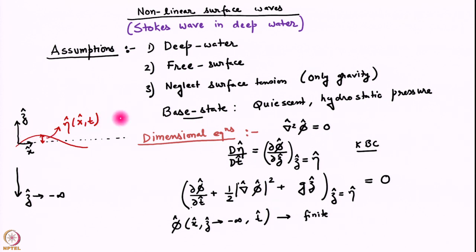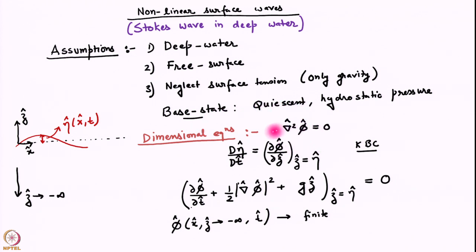This is a pictorial depiction of the base state. The z = 0 line represents the free surface in the base state and there is no velocity in the fluid below it. We then introduce a perturbation governed by the equations encountered before. The velocity field perturbations are governed by the Laplace equation for the perturbation velocity potential. We have a kinematic boundary condition which is an equation of mass conservation. Note that we write the full kinematic boundary condition now — we are not linearizing it because we are doing a nonlinear calculation.